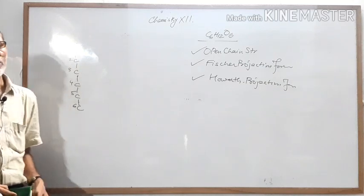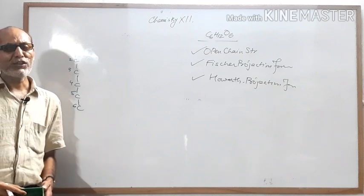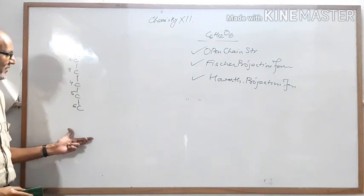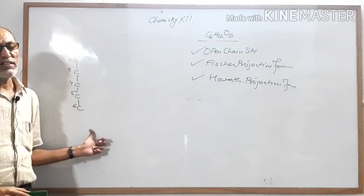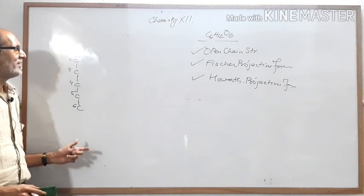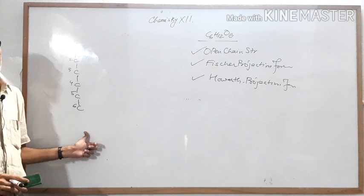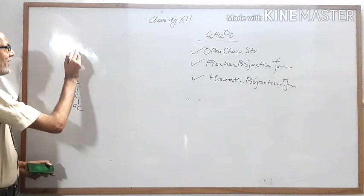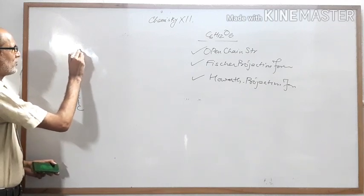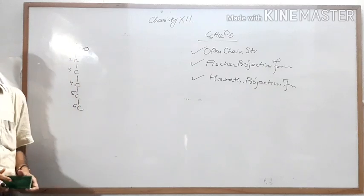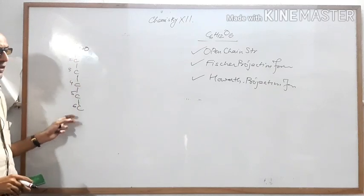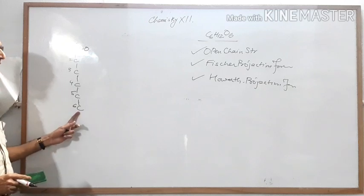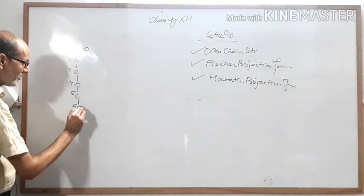According to the definition, polyhydroxy aldehyde as well as polyhydroxy ketone are called carbohydrates. Glucose is a monosaccharide and it is an aldohexose — that means one aldehyde group should be present in glucose. The aldehyde group is attached at a terminal carbon. So we convert carbon number one into CHO (aldehyde group). On the remaining five carbons, we attach hydroxyl (OH) groups as well as hydrogen.